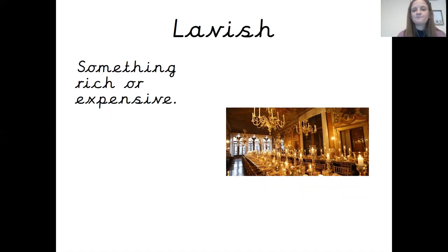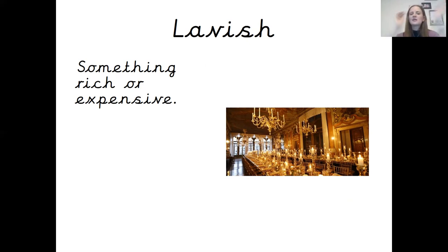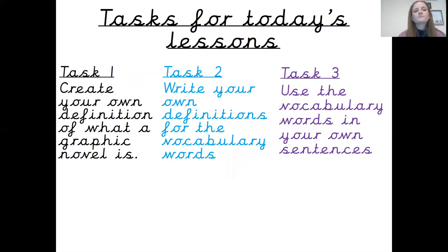Lavish is something that's really rich or expensive, and it looks expensive. For example, if you look at that ballroom, it's got gold, it's got these lavish lights hanging — these really fancy looking lights. You've got the candlesticks along the table. It just makes it look expensive.